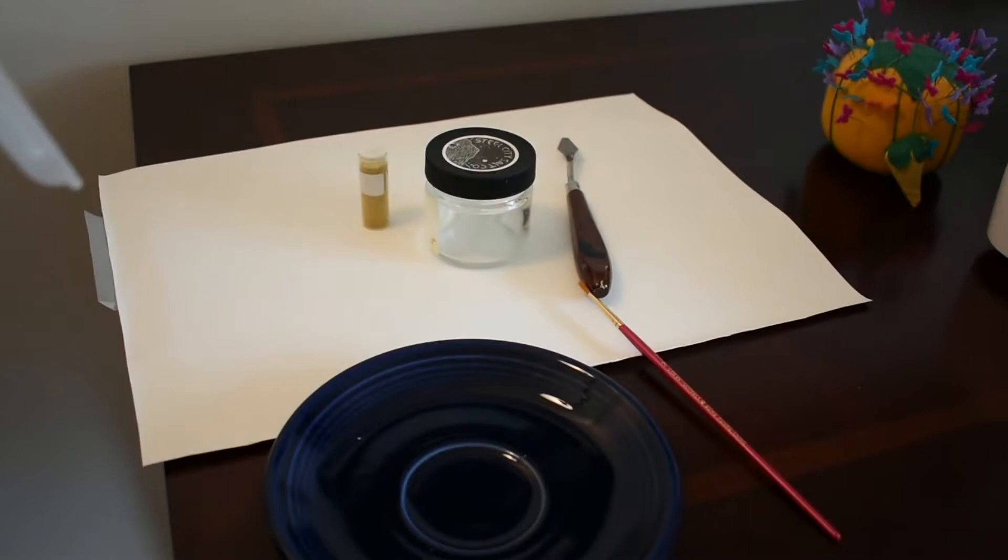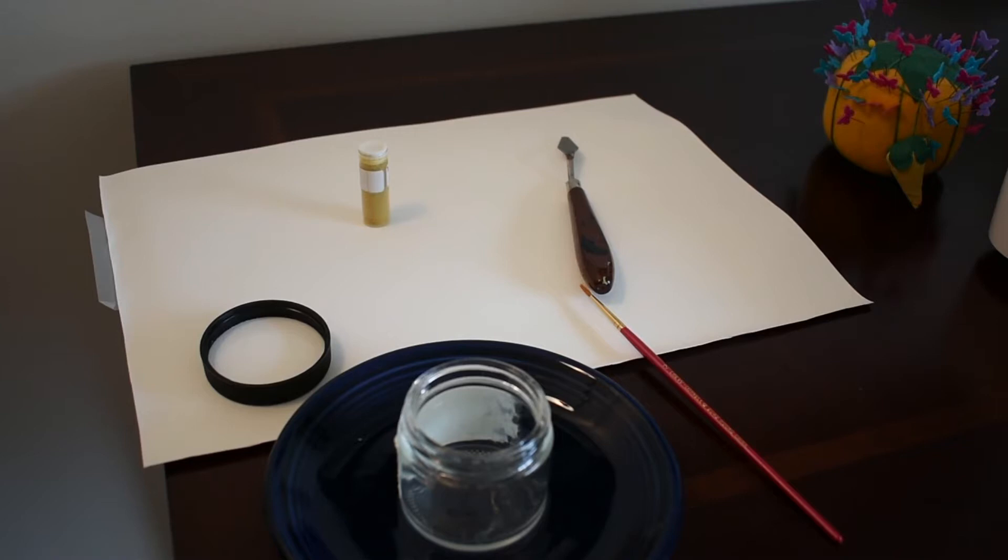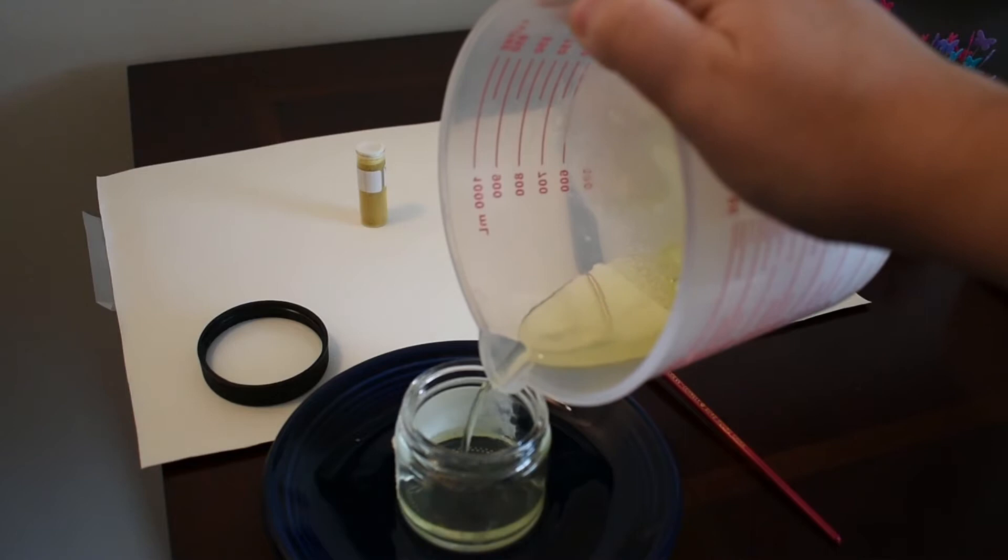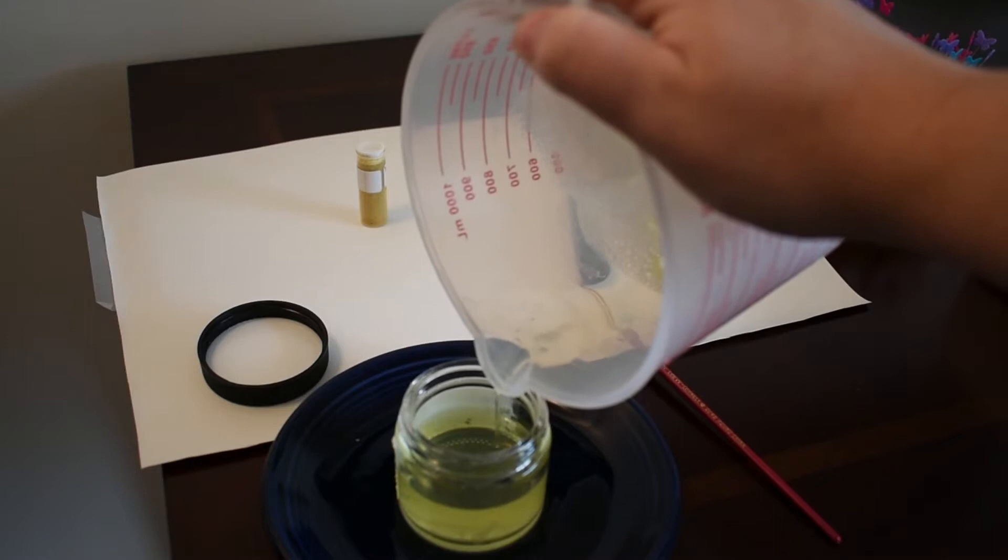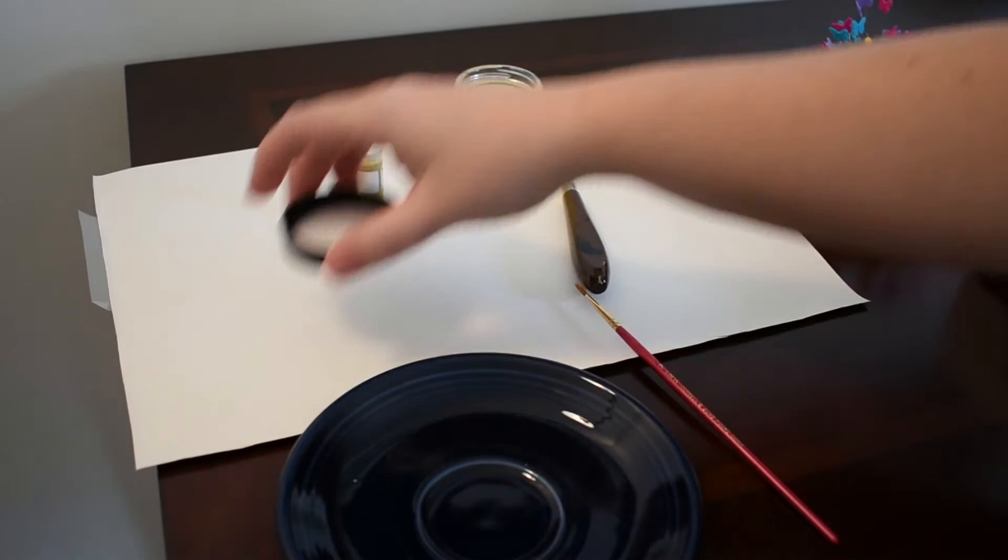So what we're going to do is pour this into a separate container. I've got a glass container that will fit easily into my scribal kit. When you go to pour this, do so slowly, and as you can see, this very watery substance will come out from underneath the thick, almost hardened now foamy substance that floats on top and easily pour out. I'm kind of amazed with how watery this is. I didn't expect that.